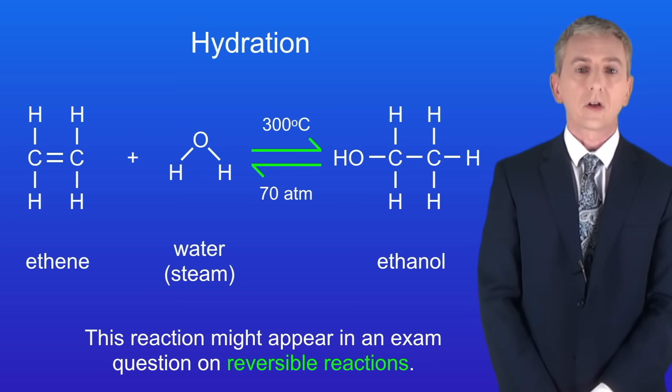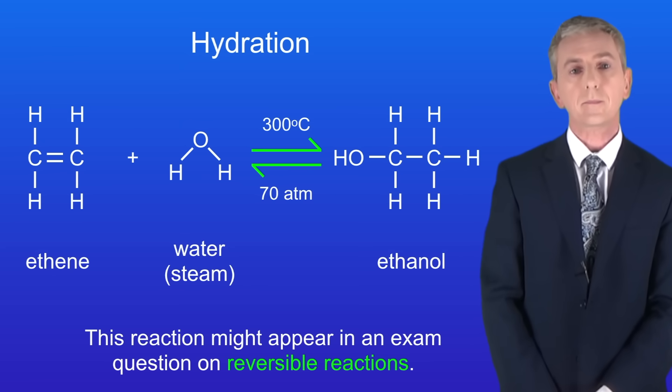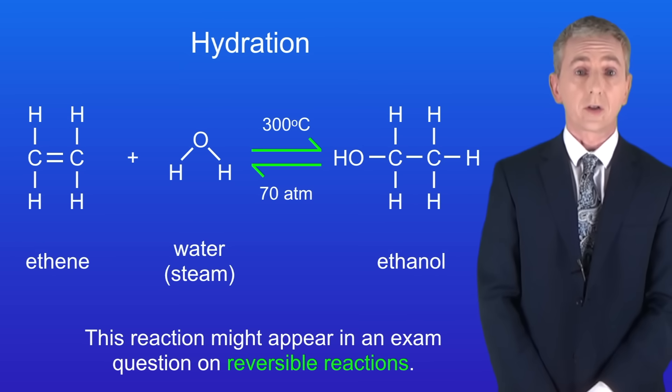Okay we're going to look now at the reaction of alkenes with the halogens chlorine, bromine and iodine. Now there are no special conditions for the reaction between alkenes and halogens. Alkenes react quite rapidly with halogens.